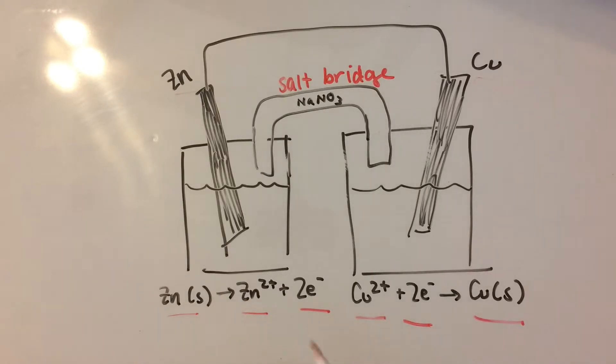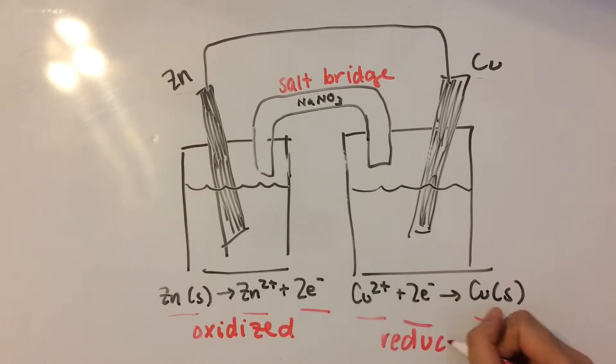So what this is telling us is that zinc is losing electrons because it's splitting into ions and electrons. Since zinc is losing electrons, it's going to be oxidized. This is telling us that copper is going to be reduced because it's gaining electrons.